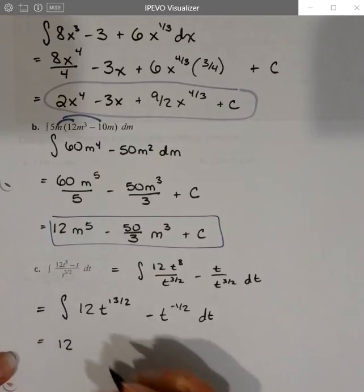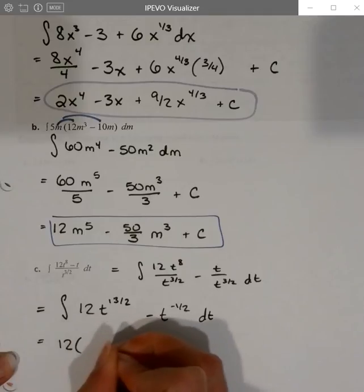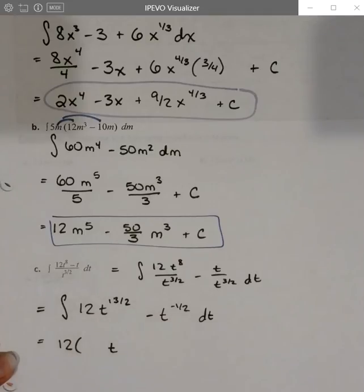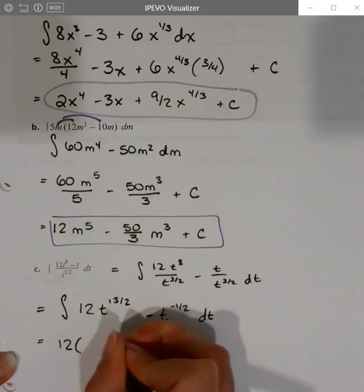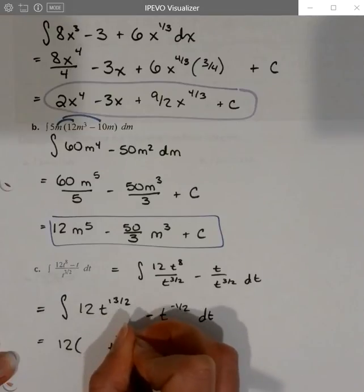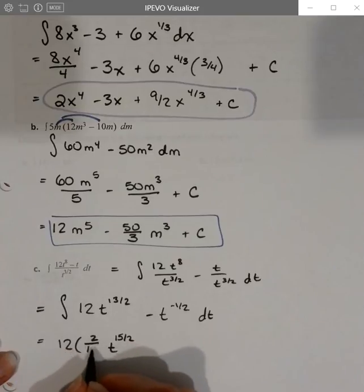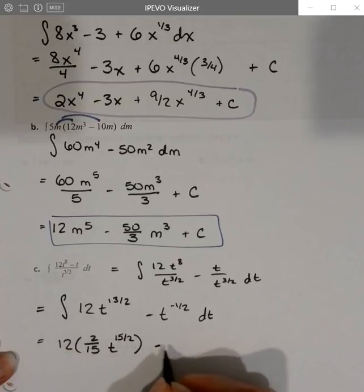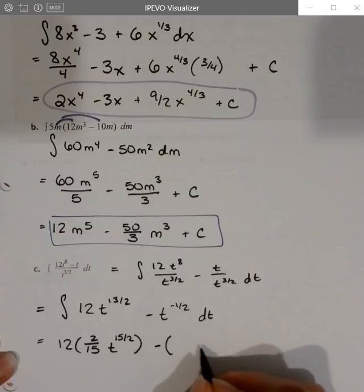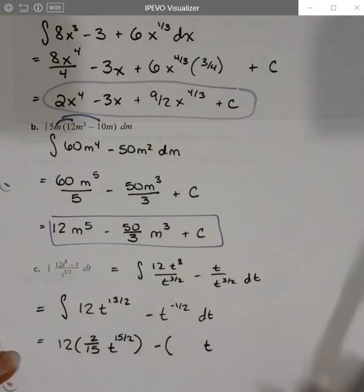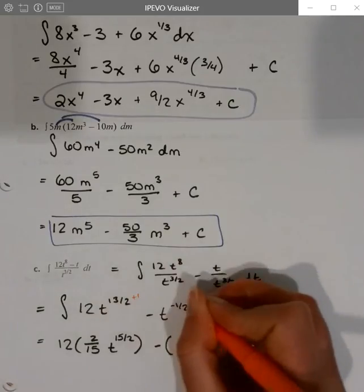So we're going to have our 12, leave a little space, times t to the, add 1 to the power. 1 is 2 halves. That's going to be 15 halves. 13 halves plus 1 is 15 halves. Then divided by the new power or multiplied by its reciprocal. So times 2 fifteenths minus, leave a little space, okay, so I've got t to the negative 1 half plus 1. I'm going to add 1 to the power. I could even be writing in some of these, like, step 1s, like plus 1 to the power, plus 1 to the power.